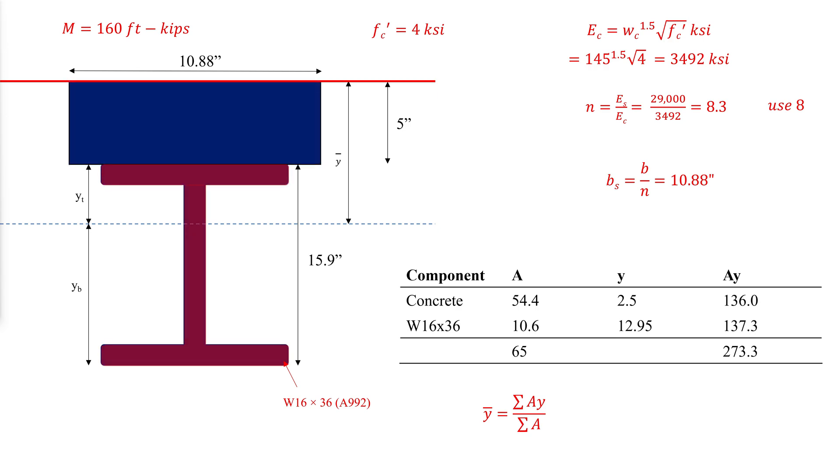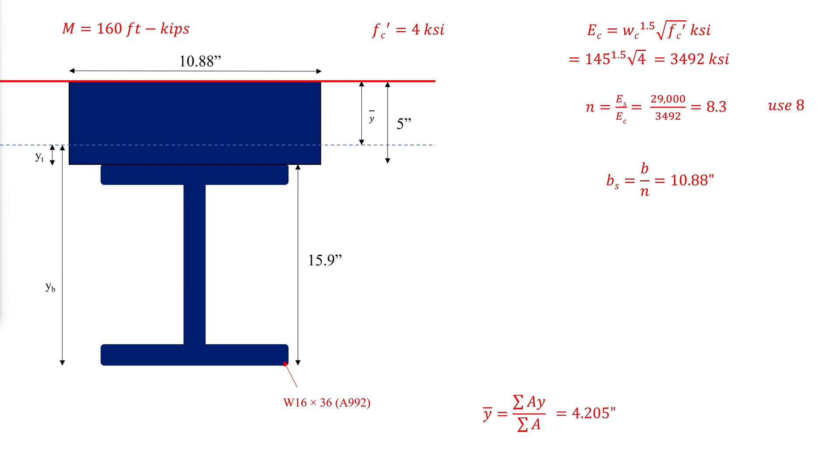The moment of inertia of the section above the neutral axis is then calculated as follows, where the moment of inertia of a rectangular area is the width times the height cubed divided by 12, and the moment of inertia of the W section is taken from table 1-1.